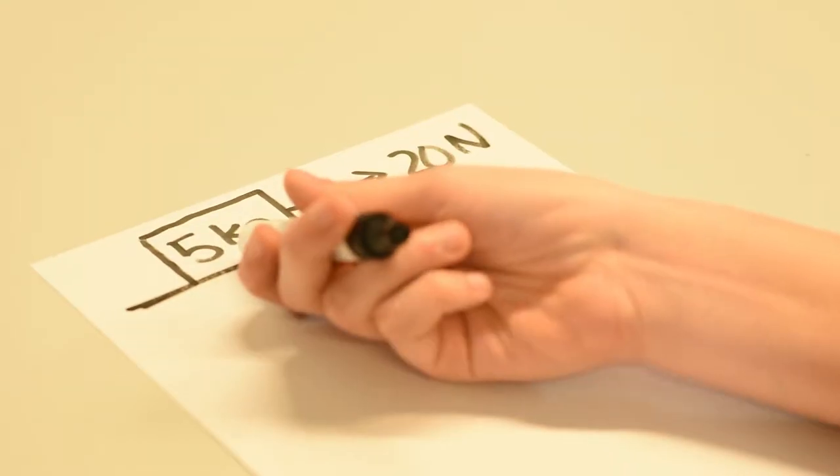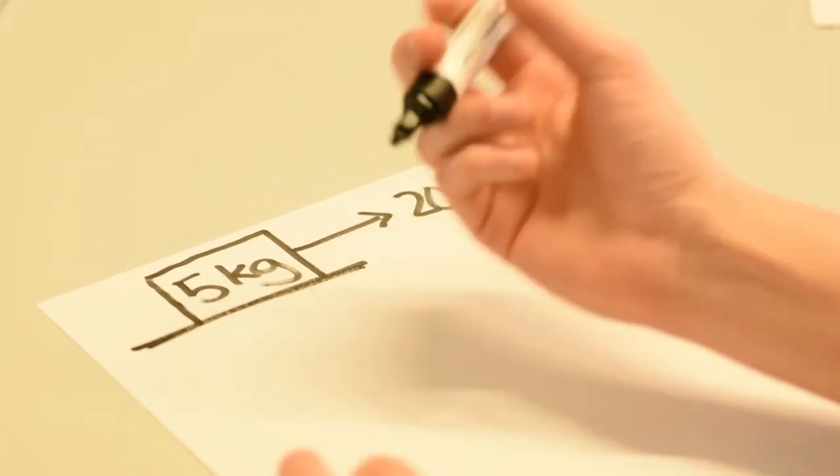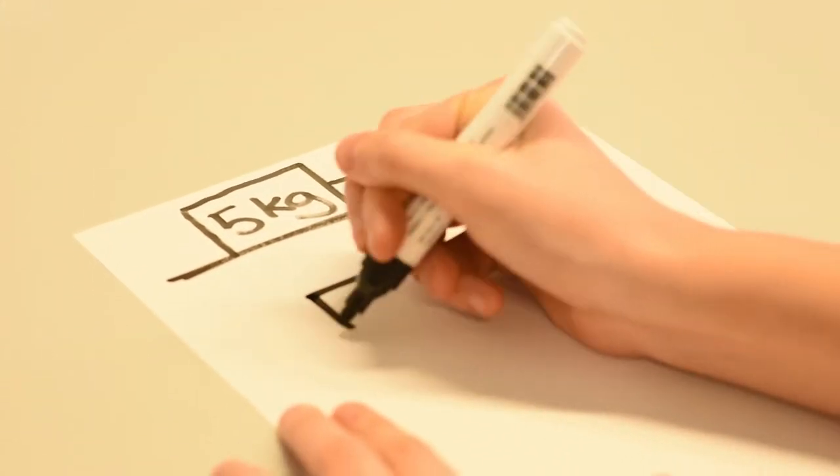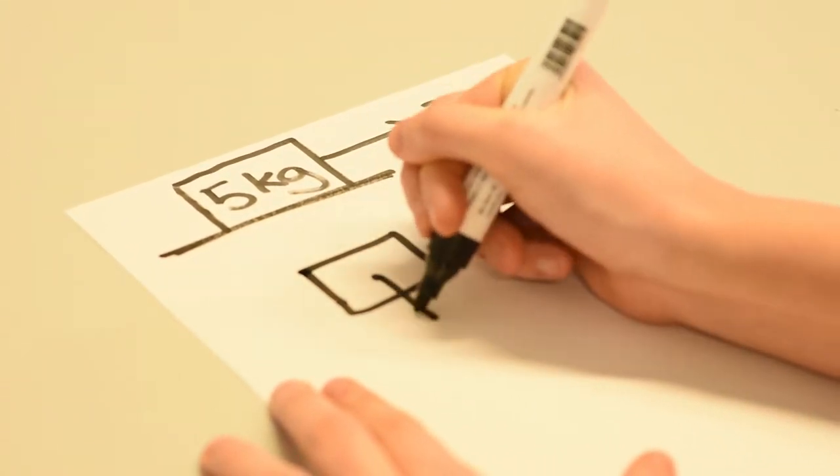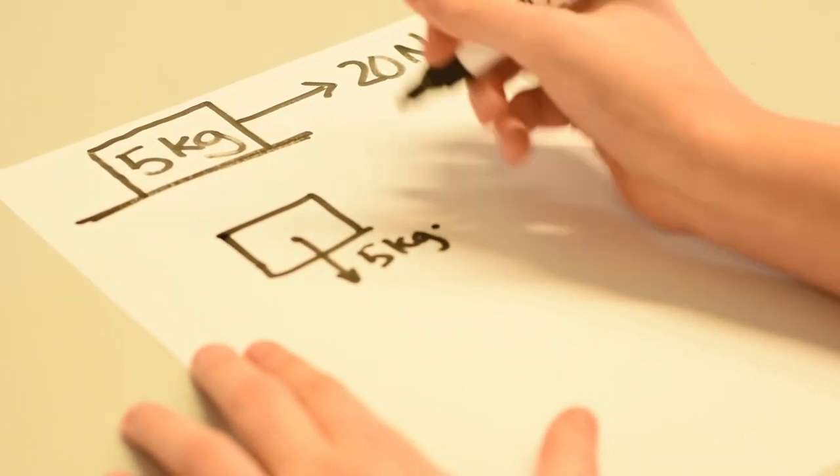So I have this box being pulled by a string with a force of 20 Newtons. And I know that there's a force acting downward on the box and that force equals mass times acceleration. And we know that the mass of the box equals 5 kilograms.